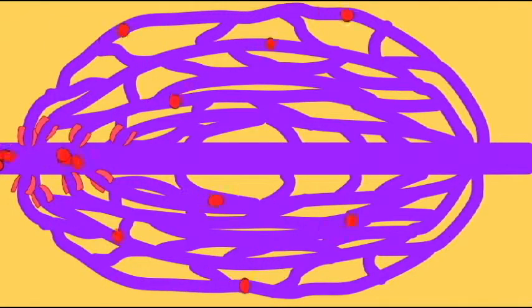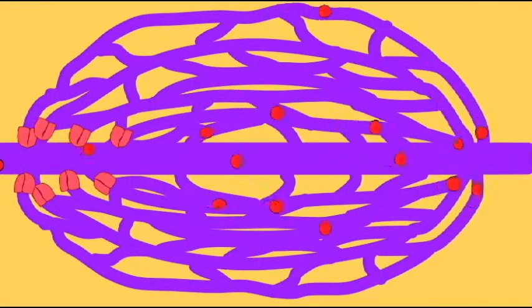When the precapillary sphincter closes, this prevents blood from going into the downstream capillary, and blood flow does not reach the downstream tissues.